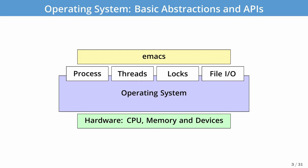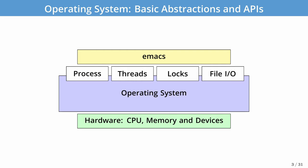The process abstraction, which we'll talk about today; threads, which we'll talk about next time; locks and synchronization after that; and finally other abstractions like file I/O, networking, etc. In today's lecture we're going to start by focusing on the process abstraction to help us build a model and understand how our operating system works.